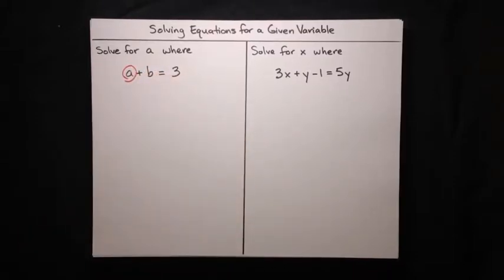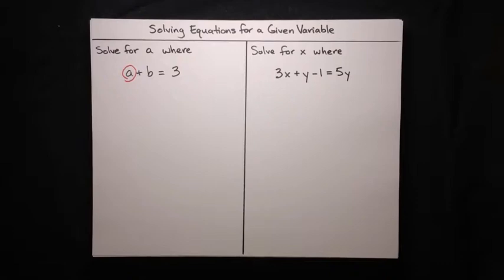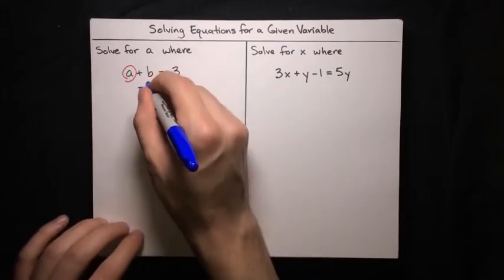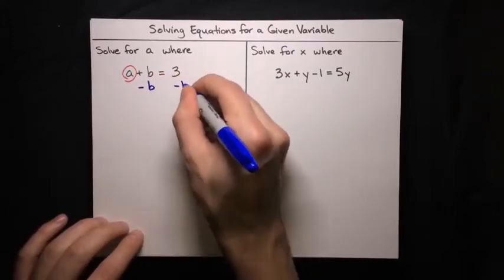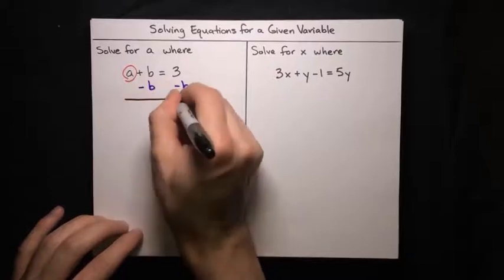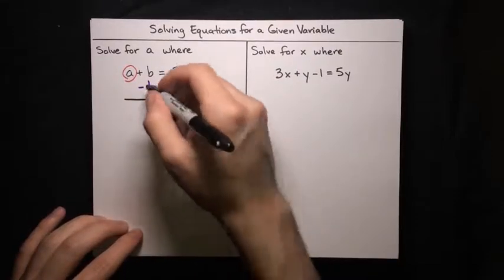To do this, we're going to focus on a as the primary variable in this equation, and just think of b like any other number. Now when we're adding some other number, b, to our primary variable, which is a, what can we do to cancel it out and just get our primary variable alone? Well, just use the addition principle. If you're adding something, you can cancel it out by subtracting. So to get rid of this plus b, we just go ahead and subtract b from both sides.